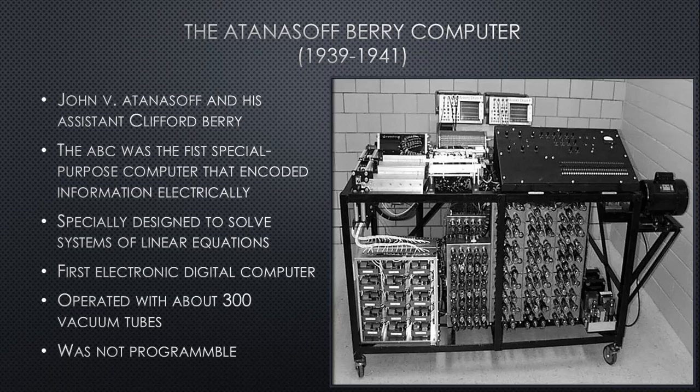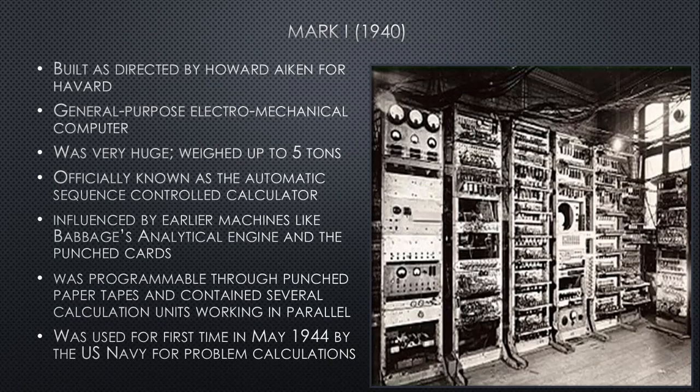Vacuum tubes worked as circuitry for these early computers — they controlled the processing. Just like nerves in the human brain send signals around the body, the vacuum tubes performed the same function as the microprocessors we have now. However, the ABC was not programmable.